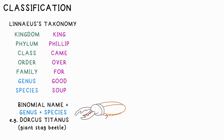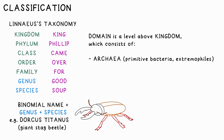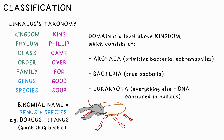As time went on, it turned out that another level above kingdom was needed: domain. The three domains are archaea — that's primitive bacteria — true bacteria, and eukaryota, which is everything else with DNA and a nucleus in the cells. Archaea are often found in extreme environments on the earth, and can therefore be called extremophiles.